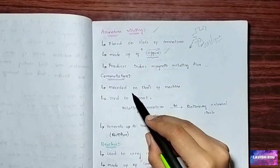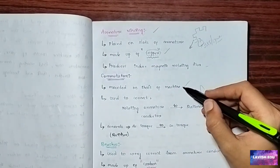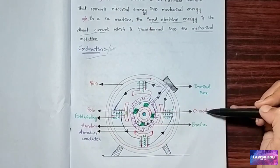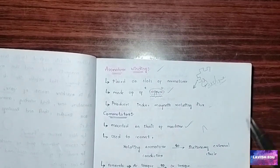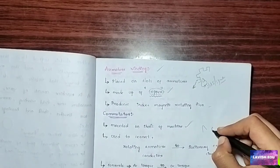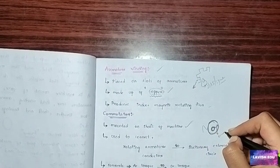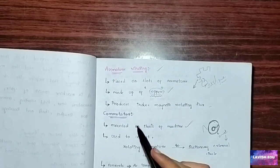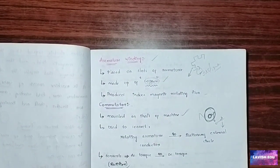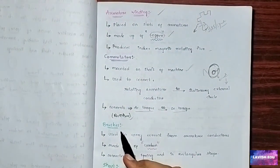Next, what is the commutator? The commutator is mounted on the shaft of the machine. The red part present near the shaft is called the commutator. The commutator is used to connect the rotating armature conductors to the stationary external circuit. To connect both the shaft and the rotating part, we use the commutator. In DC machines, the commutator works as a rectifier — it converts AC torque to DC torque.